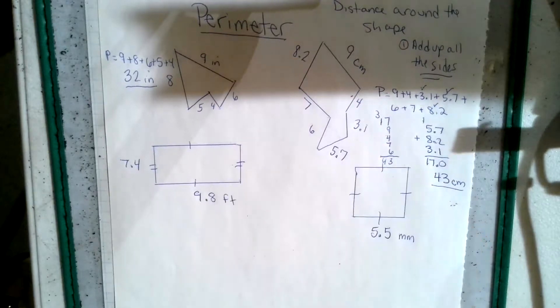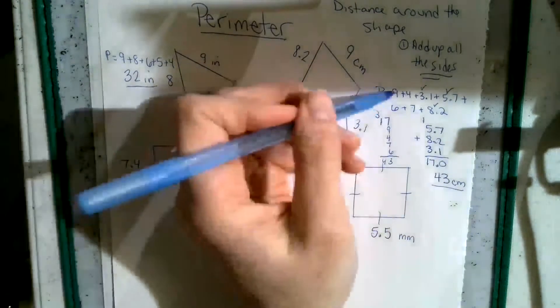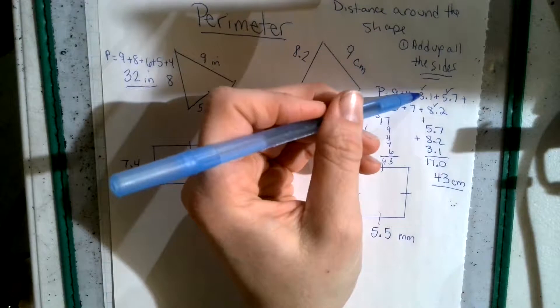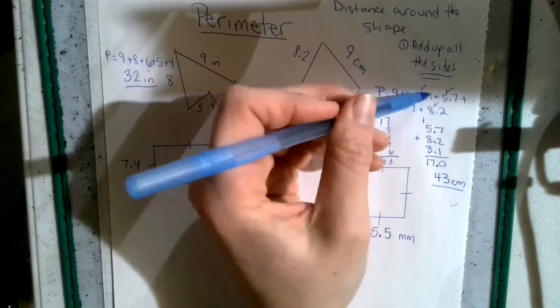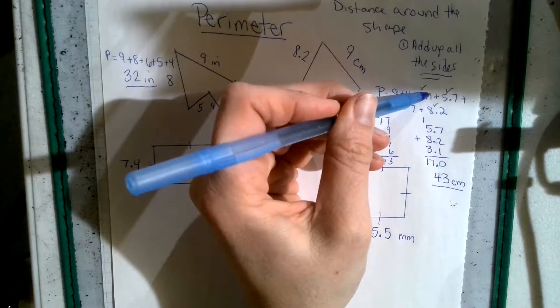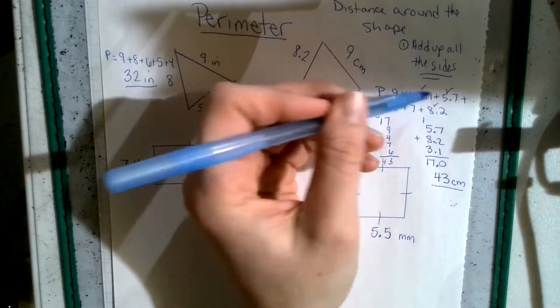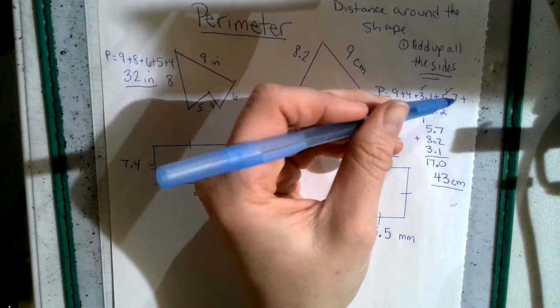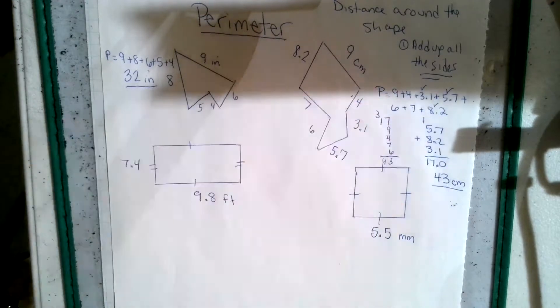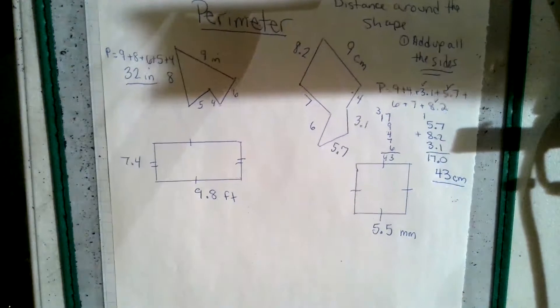So 43 and it's centimeters. So we can check that easily by just re-adding. So we have 9, 10, 11, 12, 13, 14, 15, 16, 17, 18, 19, 20, 21.8, 22, 23, 24, 25, 26, 27, 28, 29, 30, 31, 32, 33, 34, 35, 36, 37, 38, 39, 40, 41, 42, 42, plus one whole is 43. Easy way to remember that.